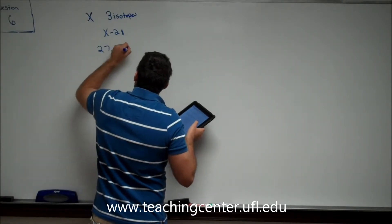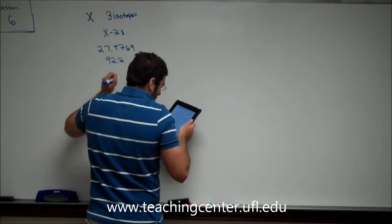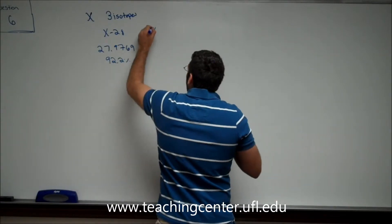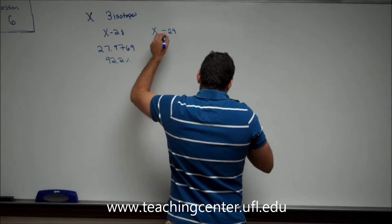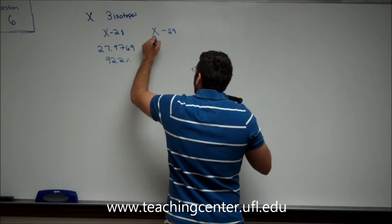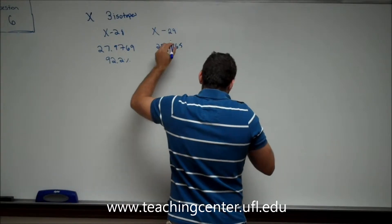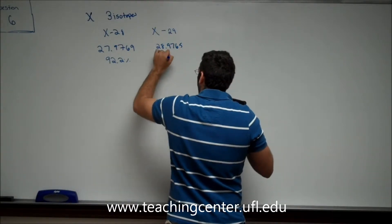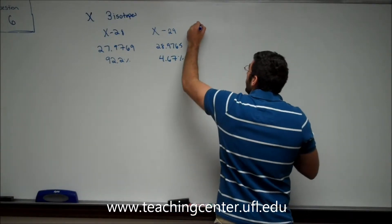And that contributes 92.2%, while X29 is 28.9765, contributing 4.67%, and X30,